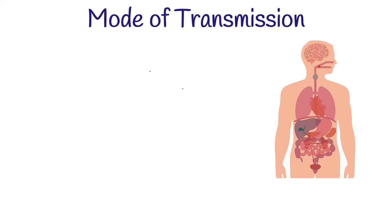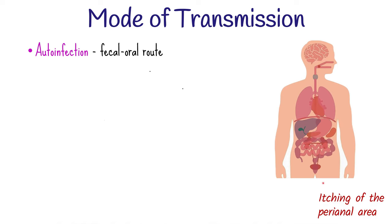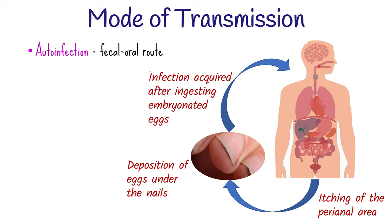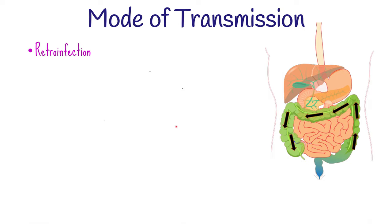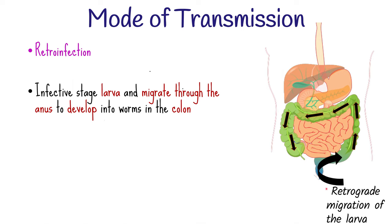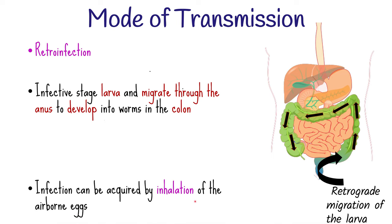One of the ways the parasite is spread is through auto-infection — direct infection of a patient mostly via the fecal-oral route. The parasite causes intense itching of the perianal area, forcing the patient to scratch with fingers, leading to deposition of eggs under the nails. This happens mostly in children who acquire the infection after ingesting embryonated eggs through contaminated fingers or nail-biting. Retro-infection is another route, where eggs laid on the perianal skin immediately hatch into infective larvae and migrate through the anus to develop into worms in the colon. Rarely, infection is acquired by inhalation of airborne eggs.